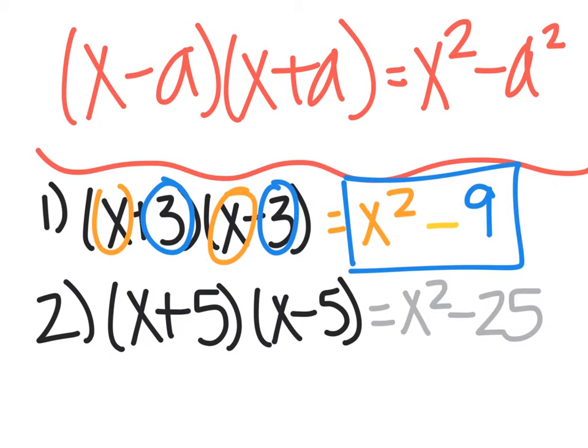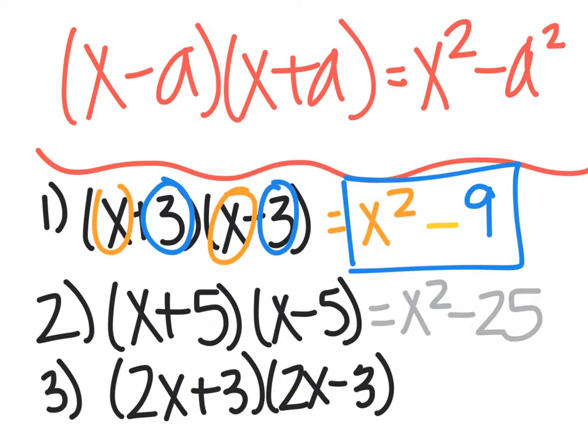For a third example, if I had (2x+3)(2x-3), when I multiply those, it gives me 4x²-9, because I multiply my two and my two, my x and my x, and my three and my three.